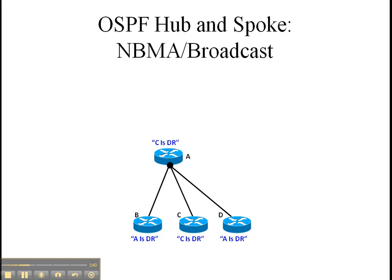The question is, why did B and D not say that C is the DR? The answer is B and D cannot see router C. Basically, B, C, and D do not have connectivity to each other. In reality, C is the router with the highest router ID, but B and D cannot see it, and this creates a problem.